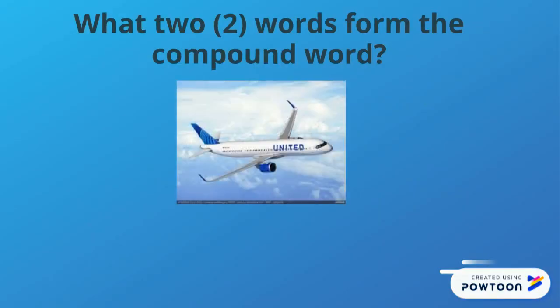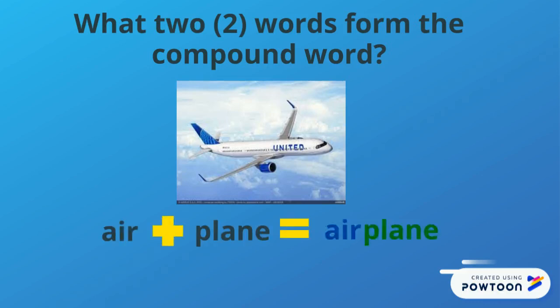What do you see here? An airplane. What two words, when we put them together, forms the word airplane? Think about it. Awesome — air and plane, when we put them together, we get the compound word airplane.